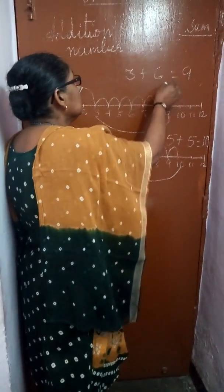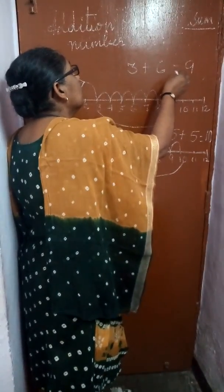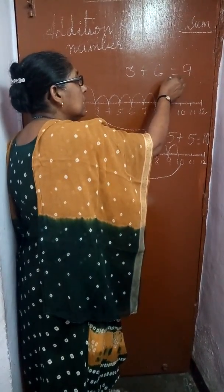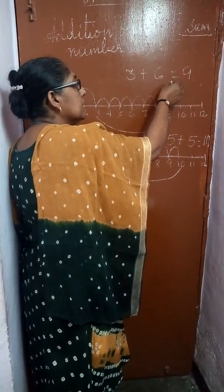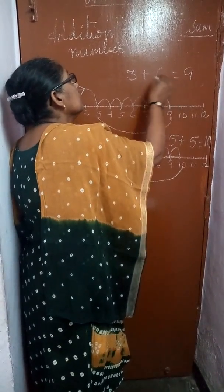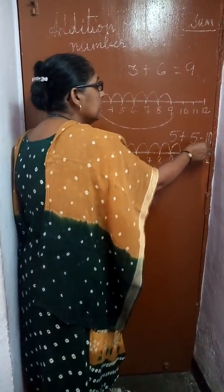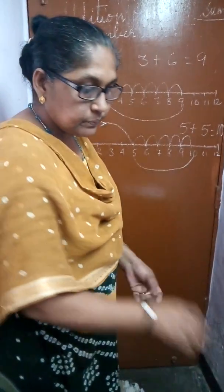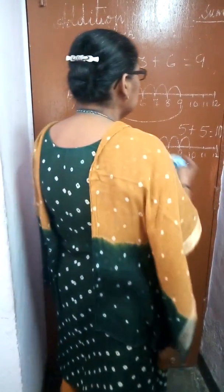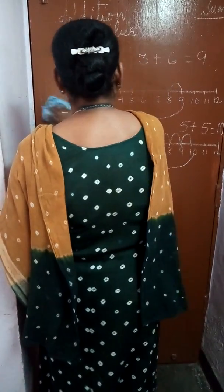Now, 2 problems I have shown you. Addition on number line: 3 plus 6 is equal to 9, and 5 plus 5 is equal to 10. Now, we can learn this also with the help of number step.